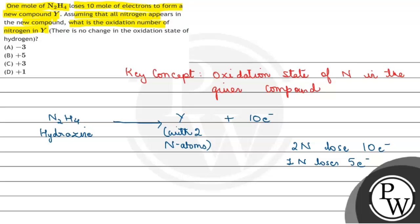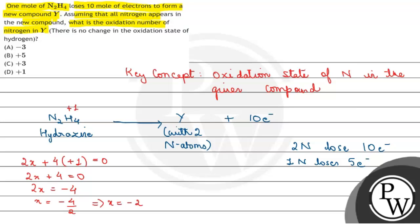First, let's find the oxidation number of nitrogen in hydrazine. Hydrogen has an oxidation number of plus 1 when bonded to a more electronegative element. Assuming the oxidation number of nitrogen is x, we write: 2x + 4(+1) = 0, which gives 2x + 4 = 0, so 2x = -4, and x = -2. Therefore, the oxidation number of nitrogen in hydrazine is minus 2.